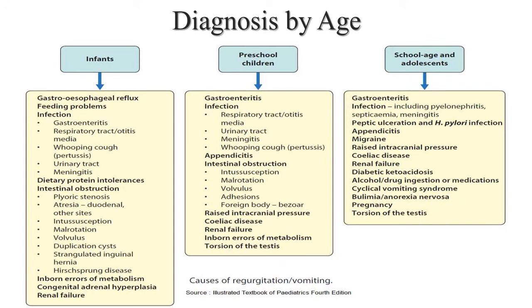Diagnosis by age. In infants: gastroesophageal reflux disease (GERD), feeding problems like overfeeding, faulty feeding, and not proper burping. Infections like gastroenteritis, respiratory tract infection or otitis media. Whooping cough (pertussis) — intense coughing followed by vomiting. Urinary tract infection, meningitis. Dietary protein intolerance or milk protein intolerance. Intestinal obstructions like pyloric stenosis, atresia — duodenal or other site.